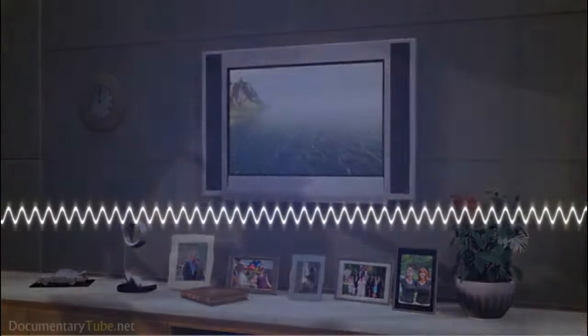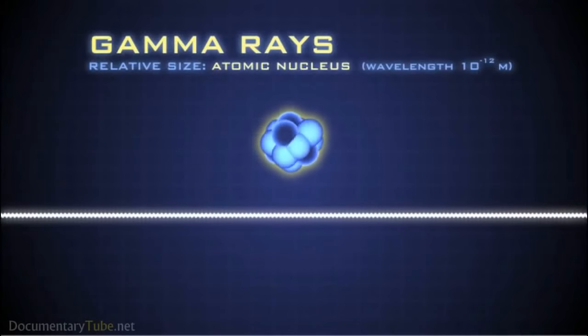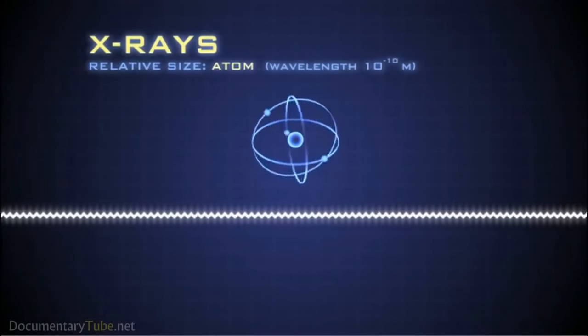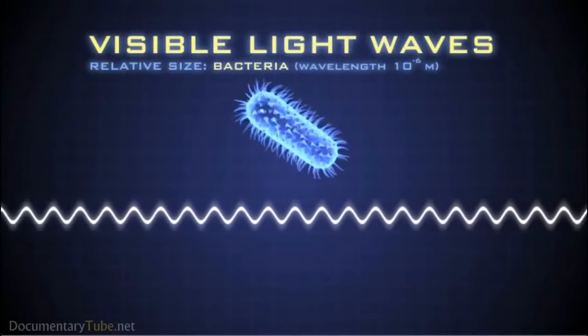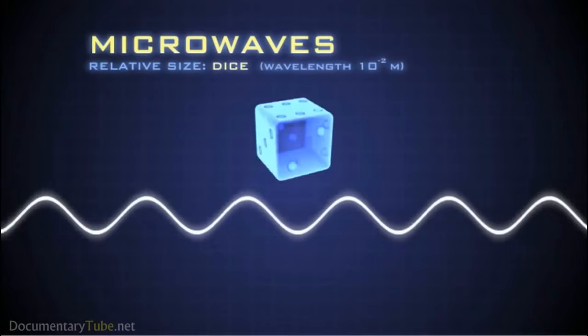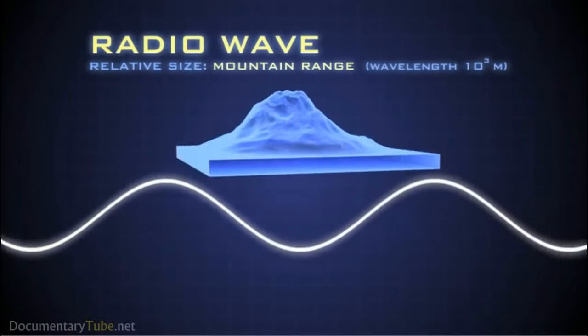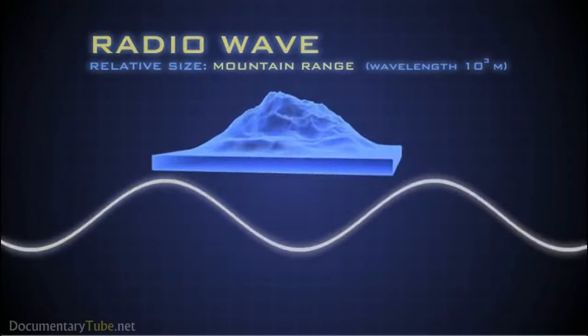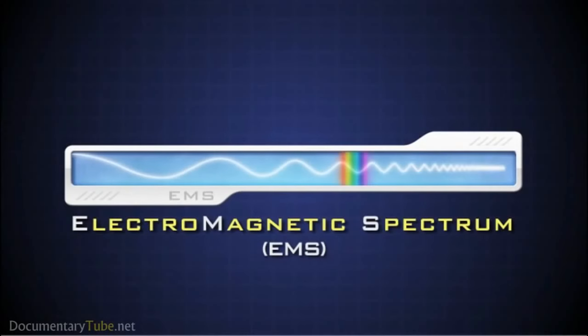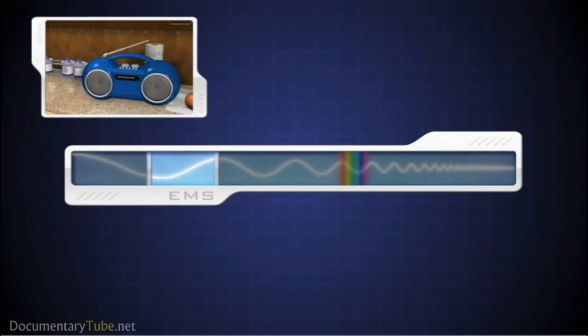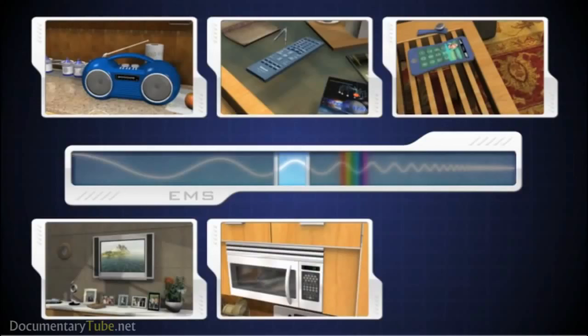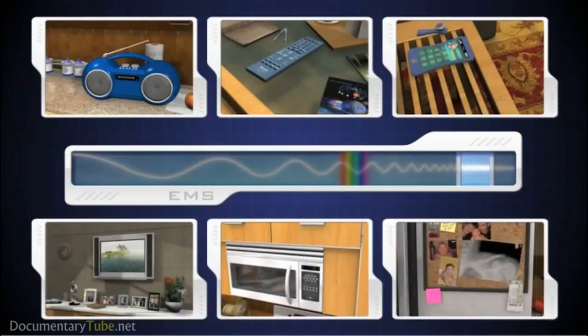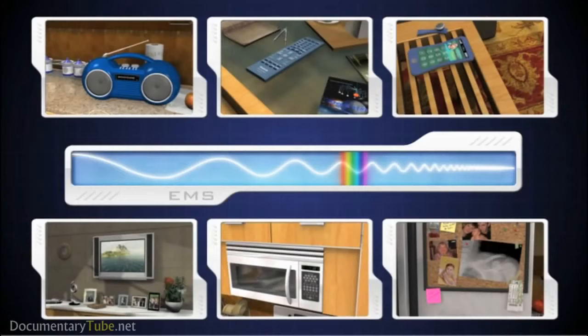These waves spread across a spectrum from very short gamma rays to X-rays, ultraviolet rays, visible light waves, even longer infrared waves, microwaves, to radio waves which can measure longer than a mountain range. This spectrum is the foundation of the information age and of our modern world. Your radio, remote control, text message, television, microwave oven, even a doctor's X-ray, all depend on waves within the electromagnetic spectrum.